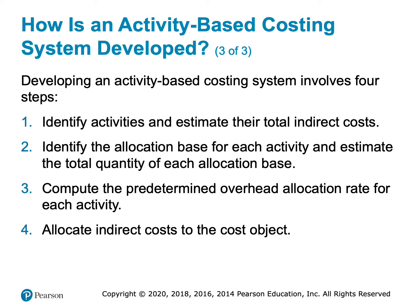Then we'll allocate the indirect cost to the cost object. Students sometimes struggle with this because they think it's something new and different, but activity-based costing isn't really new and different — it's allocating overhead just like we've done before in Chapters 2 and 3. We're just going to do it multiple times. Instead of one overhead rate, we're going to have an overhead rate for each different activity.